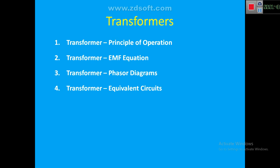The next topic is transformer equivalent circuits. Equivalent circuits cover the same scenarios as phasor diagrams, analyzing every voltage drop separately. The key difference is that phasor diagrams are used when the transformer is the end product or used in small power systems, whereas equivalent circuits are needed when the transformer is used in a huge power system — in those cases, phasor diagrams are not valid.